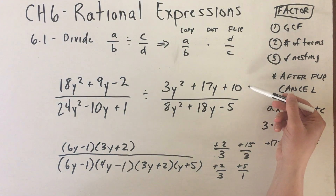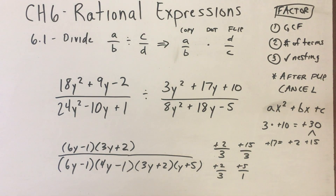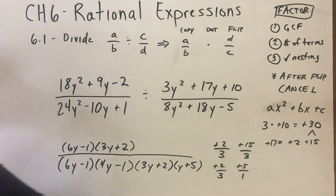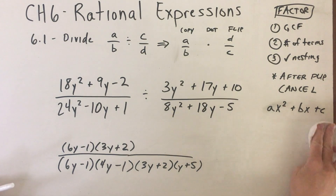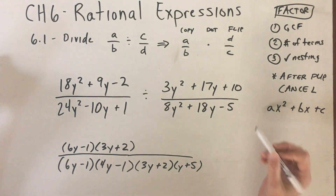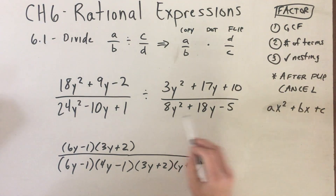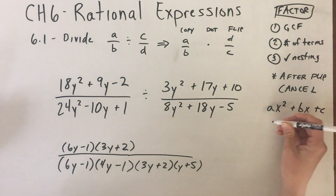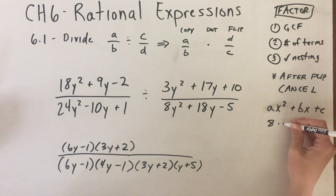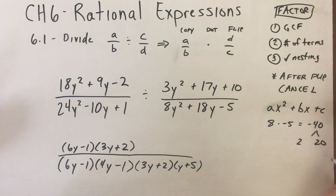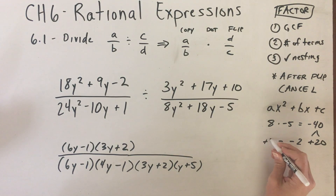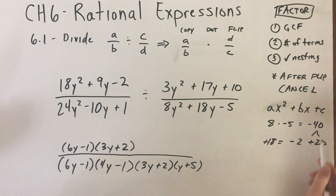Now we have factored the third polynomial and placed its factors accordingly. Only left to factor is the last one: 8y² + 18y - 5. Looking at 8, 18, and 5 — no common factors, so no GCF. It's a three-term polynomial, so we use synthetic factoring again: 8 times negative 5 is negative 40. I'm looking for factors of negative 40 that sum to 18. Using negative 2 and positive 20 — they multiply to negative 40 and sum to positive 18.